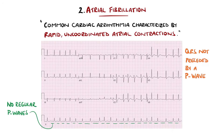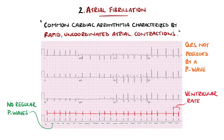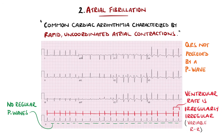Only some of the electrical signals get conducted down into the ventricles and therefore lead to ventricular depolarisation, but there is no real pattern of which impulses will get conducted. Therefore, we end up with the textbook irregularly irregular heart rhythm, described as a variable interval between the R waves on the ECG.